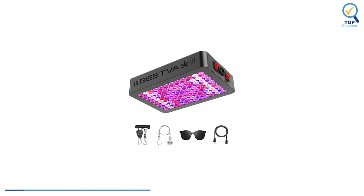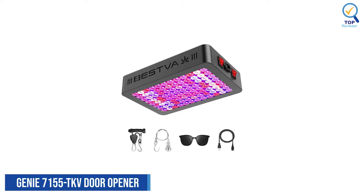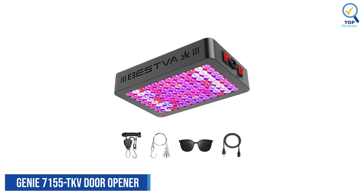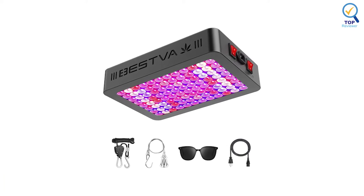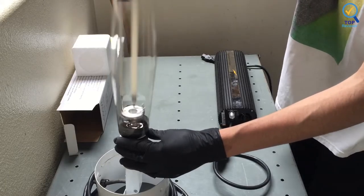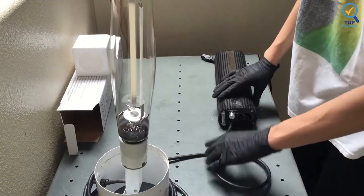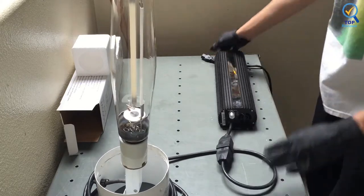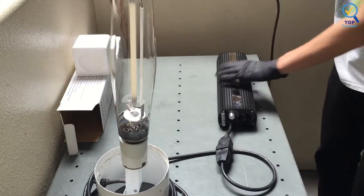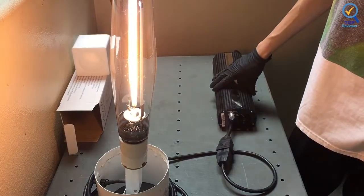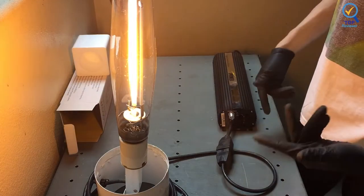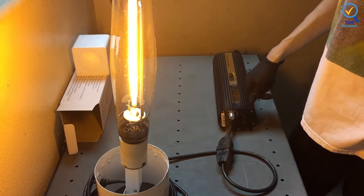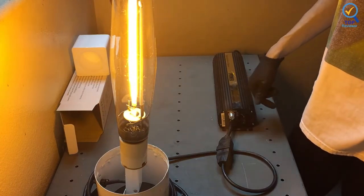Number 2. iPower 1000W HPS MH Digital Dimmable Grow Light. The iPower 1000W HPS MH Digital Dimmable Grow Light is designed to cultivate indoor plants. It features full-spectrum bulbs that'll get your plants through all stages of growth. One feature that stands out in iPower 1000W grow light is the Dimmable Electronic Ballast, which supports 120V and 240V input.